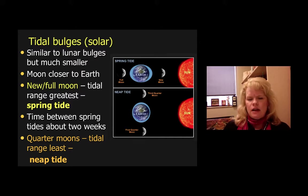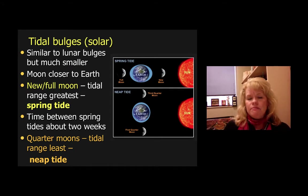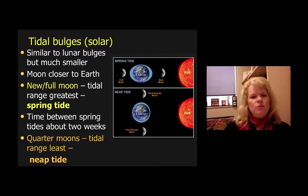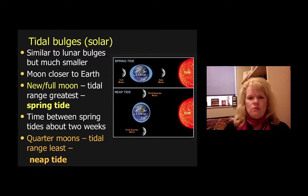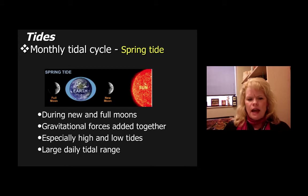We call that spring versus neap tide. New and full moons produce spring tides, while quarter moons — third quarter and first quarter, where the Moon is not in between us and the Sun — produce a neap tide. How long does it take between each of these tidal patterns? It takes a tidal month, and we'll get to that in just a minute. The monthly tidal cycle for spring tide happens during cycles of full moon and new moon.